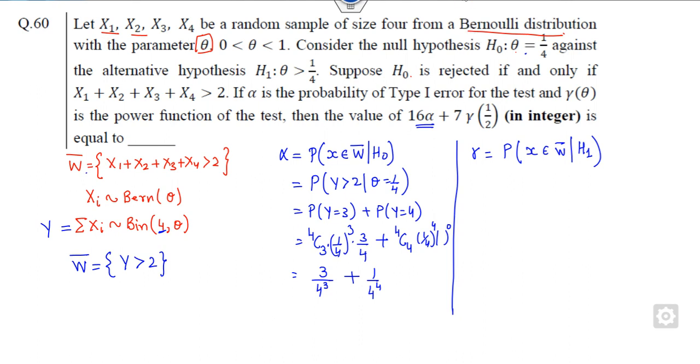Now similarly you can find the value of γ. Again it will be P(y > 2|H₁). We find the value at θ = 1/2. So again I can write as y = 3 and 4, so it can be written as ⁴C₃(1/2)³(1/2)¹ + ⁴C₄(1/2)⁴. This equals 4/2⁴ + 4/2⁴, so the answer is 5/16.